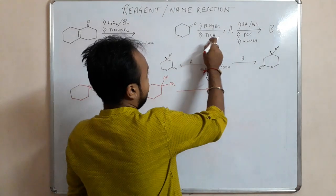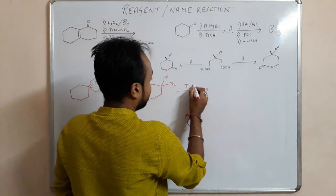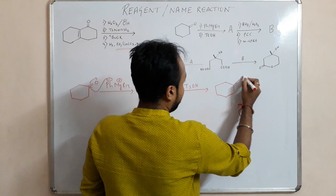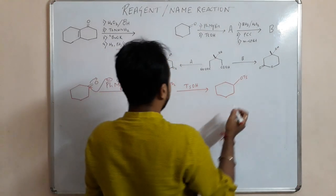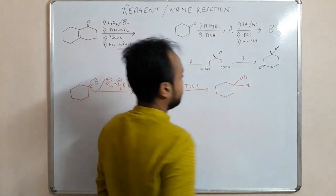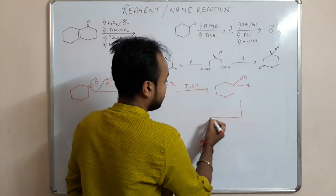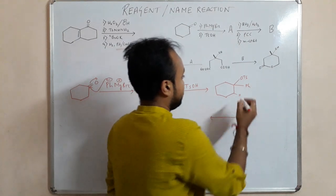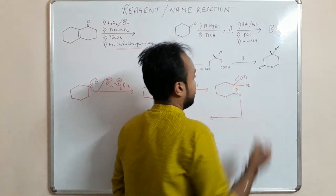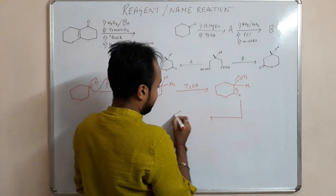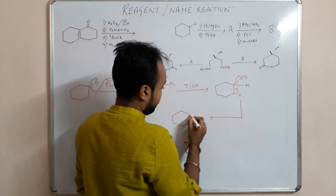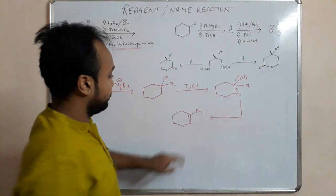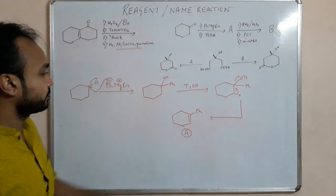It will form OMgBr and then if you work it up it will form OH. So next step we are adding tosyl chloride, that will form OTs here. Now what happens, this proton, any one proton, this undergoes elimination.